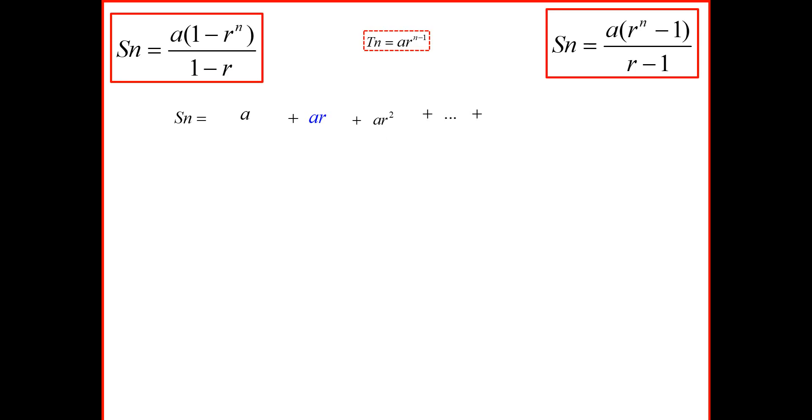We're going to move on to the last term. The last term would be indicated by a times r to the power (n minus 1). So the term before ar to the power (n minus 1), the second last term, would be ar to the power (n minus 2).